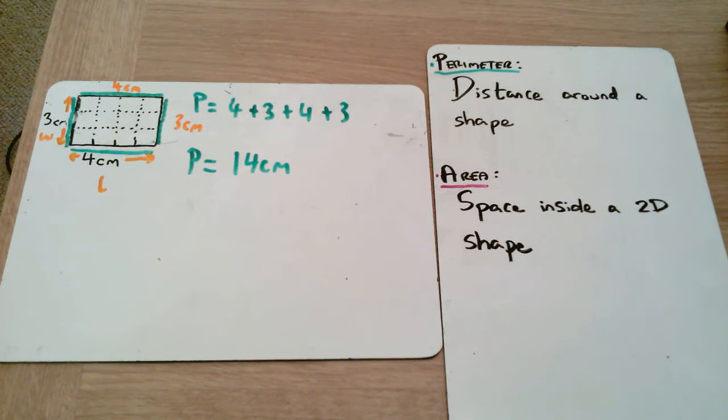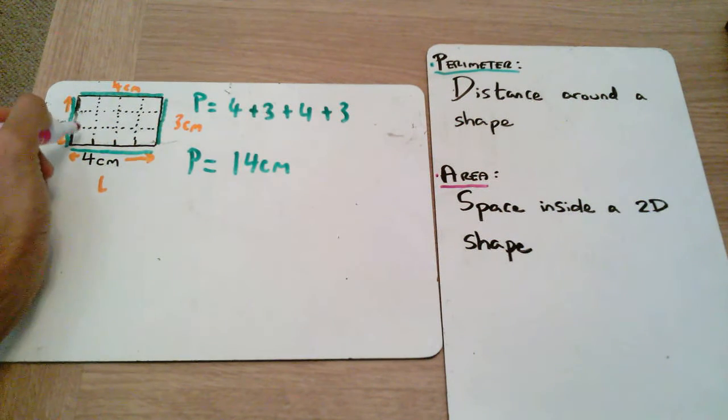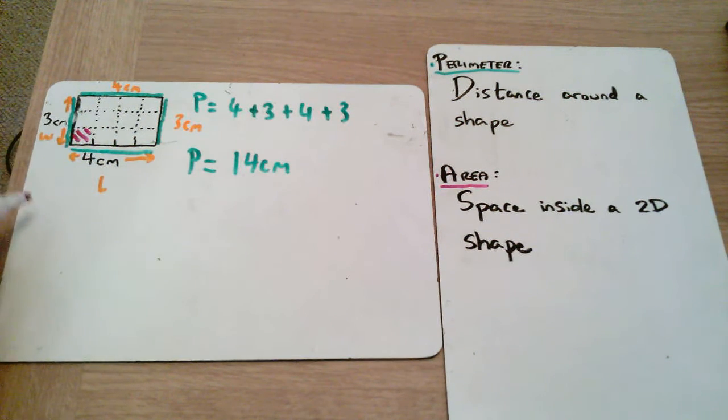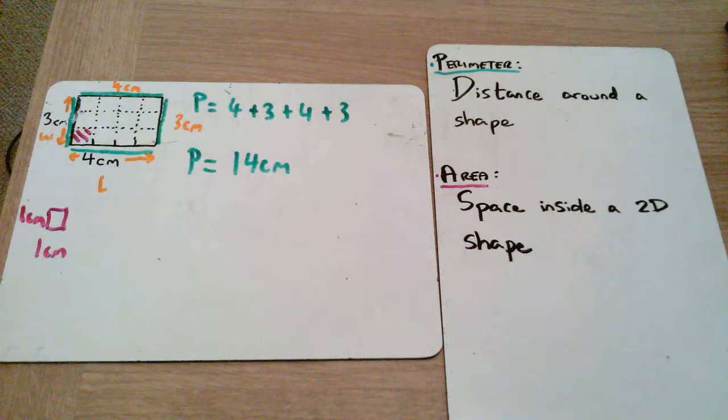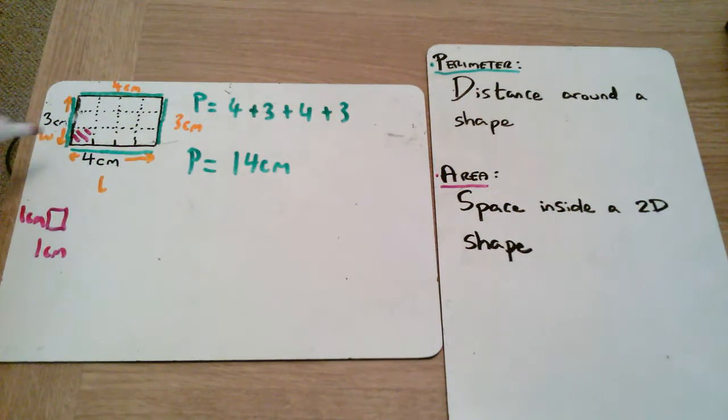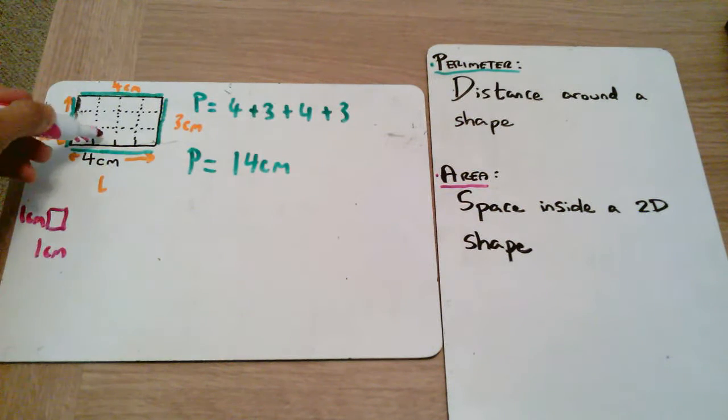Now area is a little bit different and it's not measured in centimeters - there's a slightly different unit. Area talks about the space inside a shape and it uses what we call a centimeter squared, which is a centimeter by a centimeter. It's a square that's one centimeter by one centimeter, making a square centimeter, and we can see that here I've shaded a square centimeter.